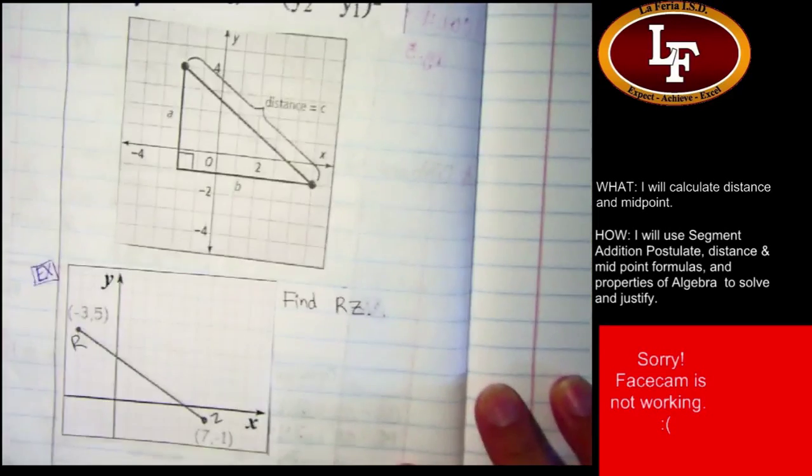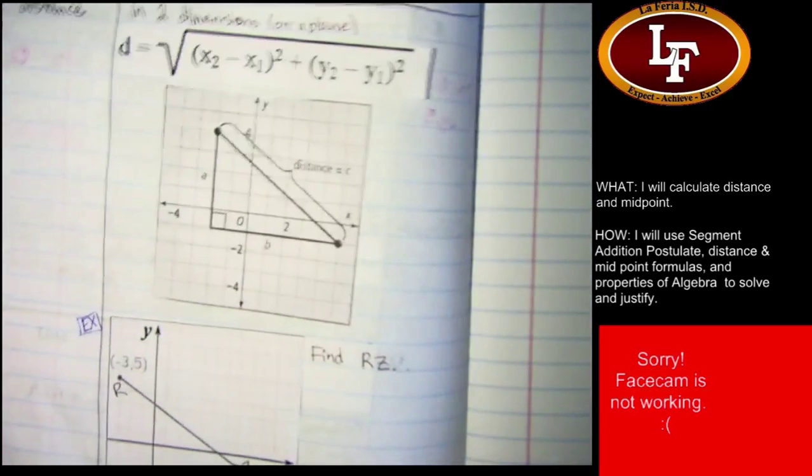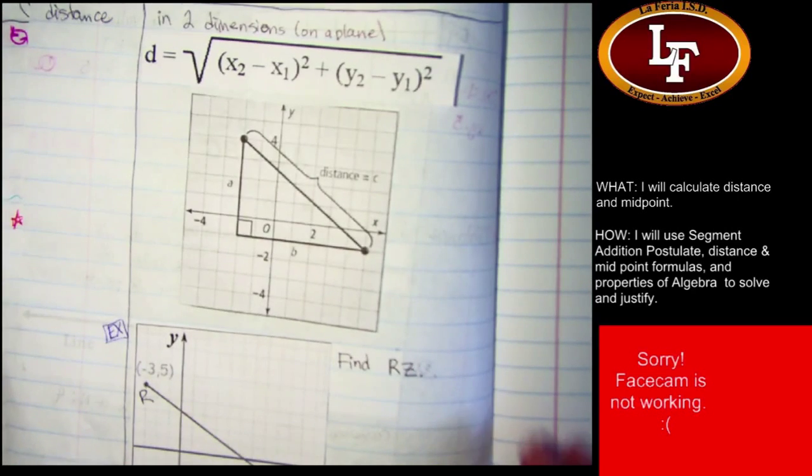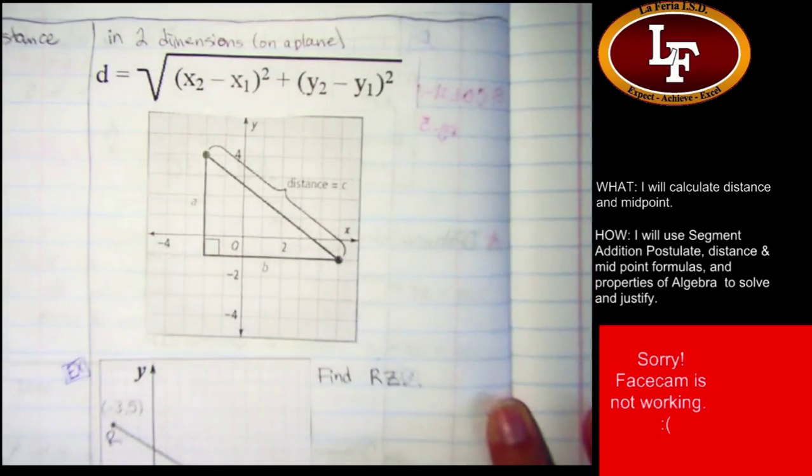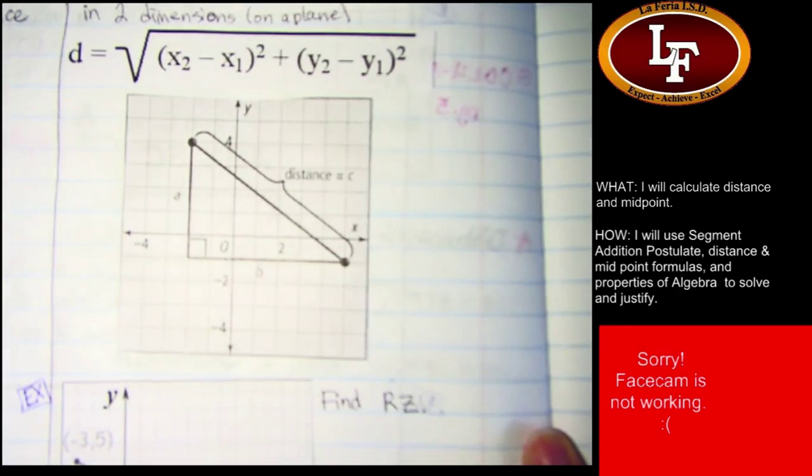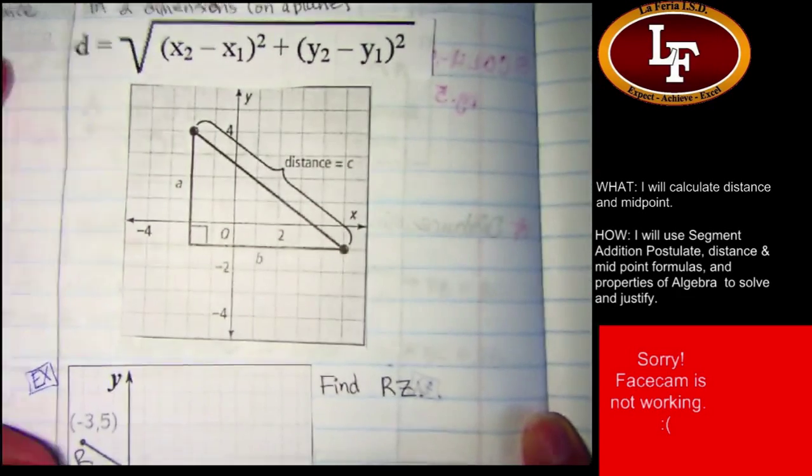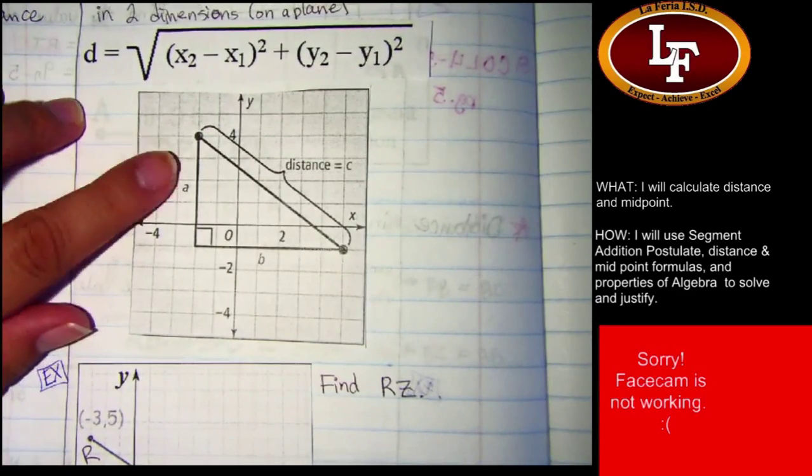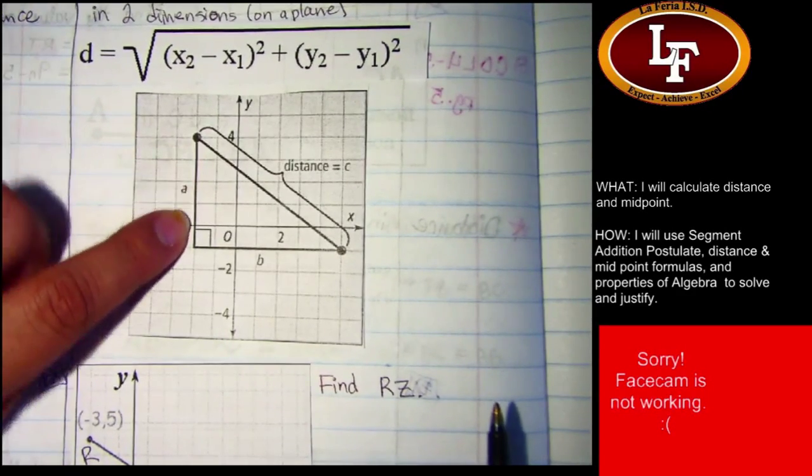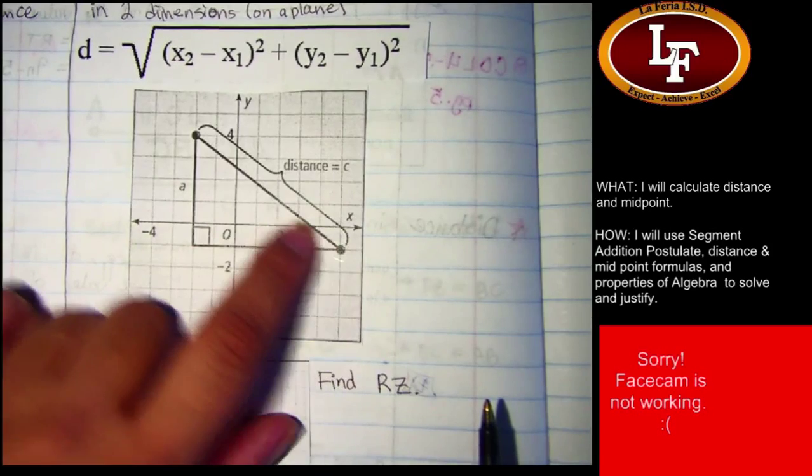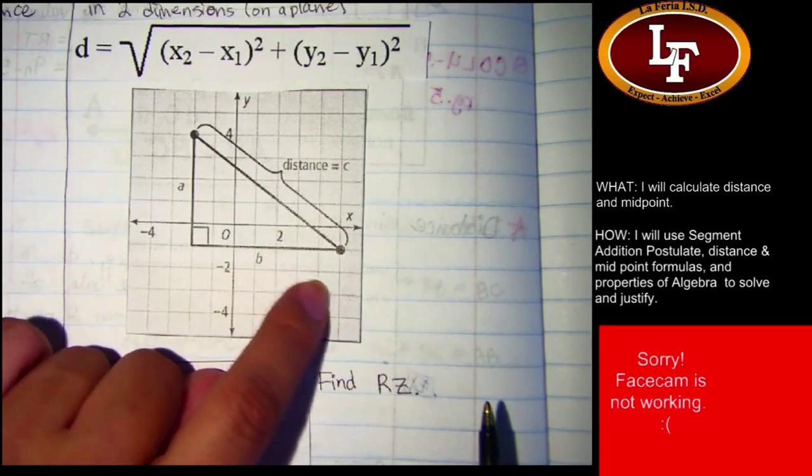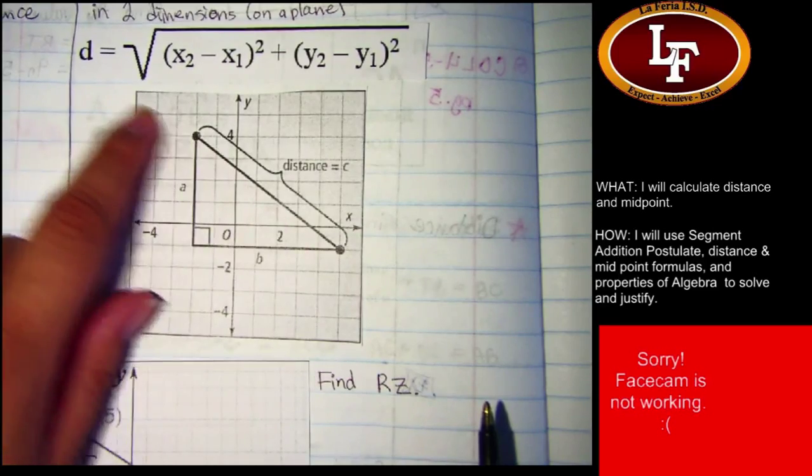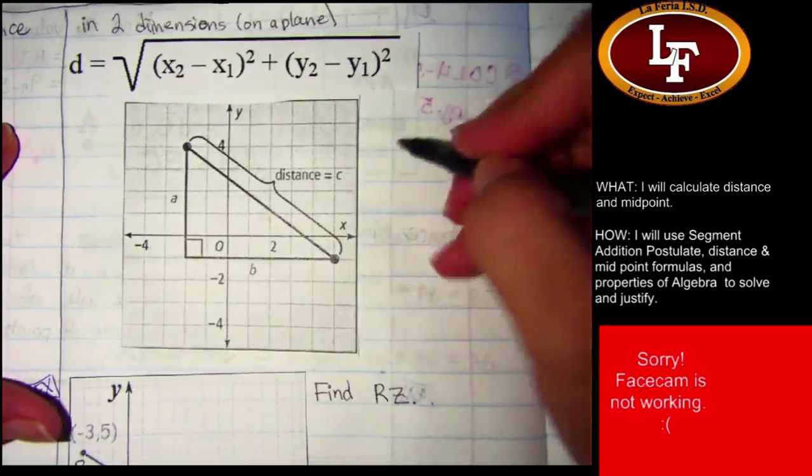All right, let's finish the example that we left off on yesterday. Yesterday, the last thing that we were talking about was distance in two dimensions on a plane. And I want to add this right triangle thing. Looks familiar, yes? Do you remember any kind of theorem or formula that dealt with right triangles? The Pythagorean theorem, yeah.